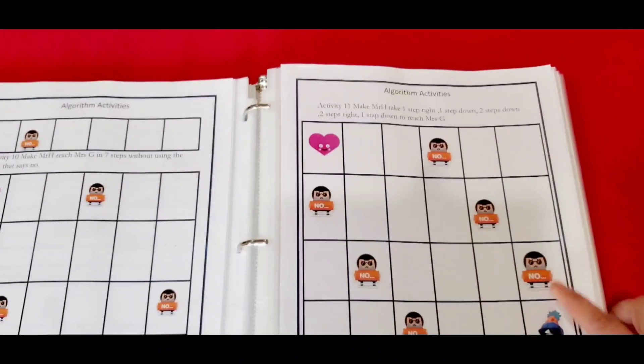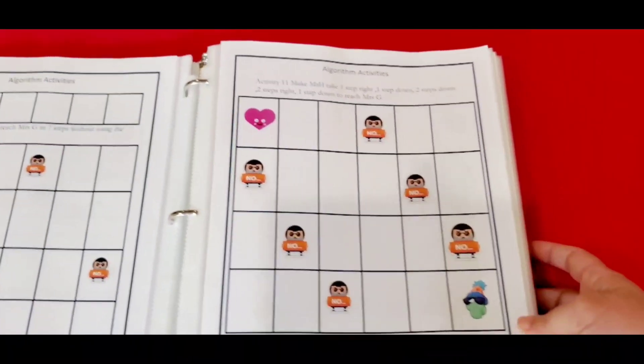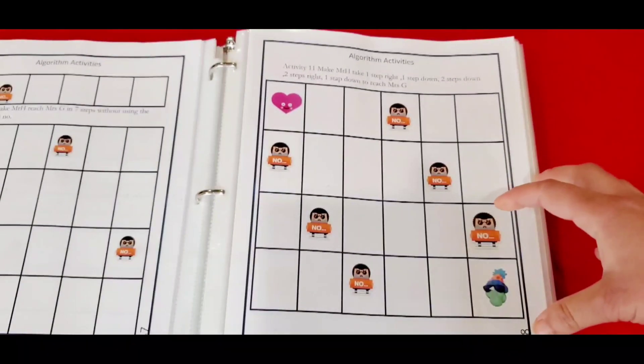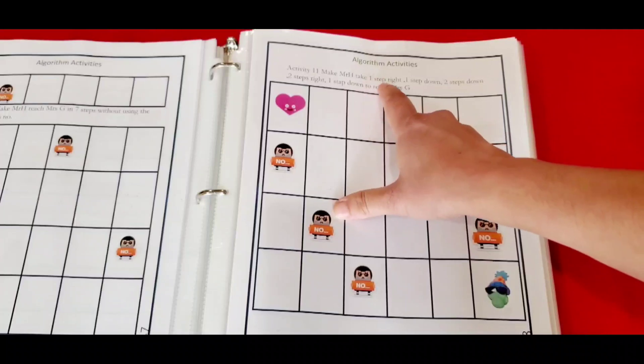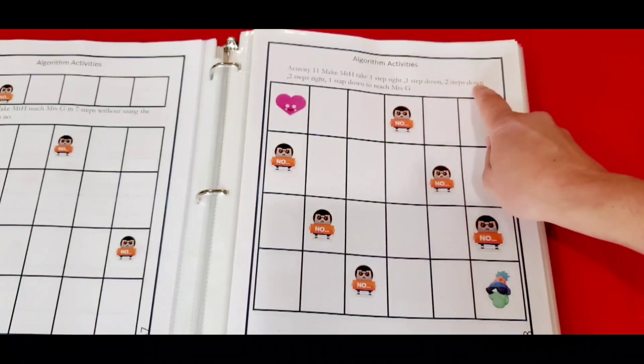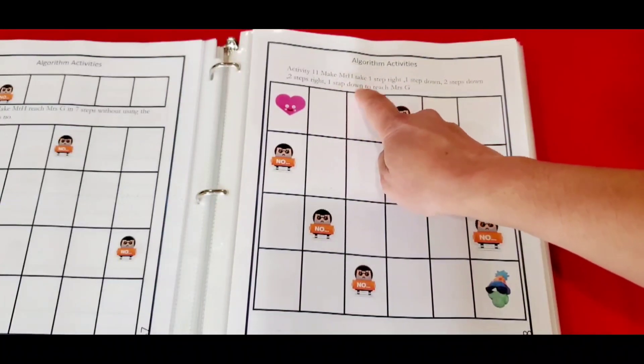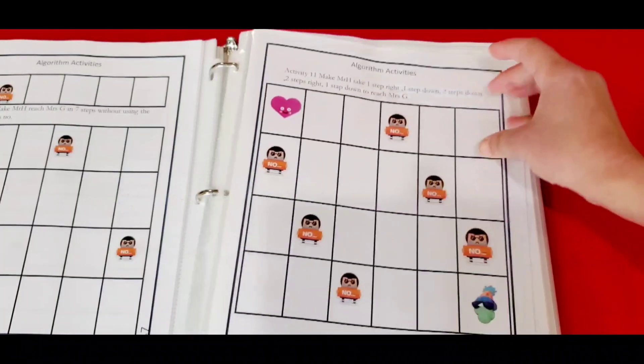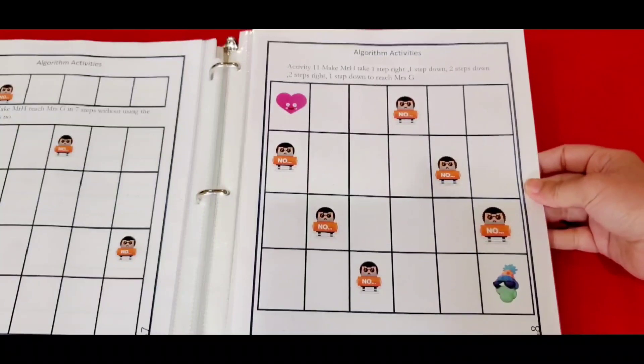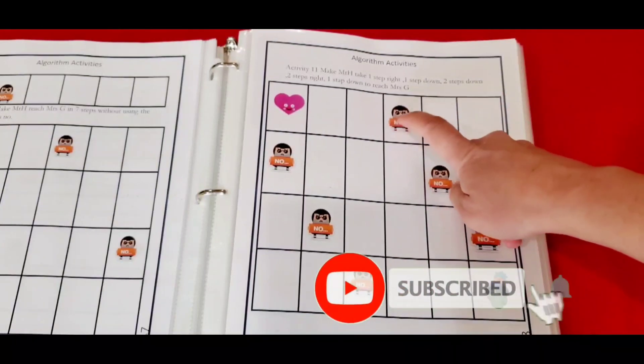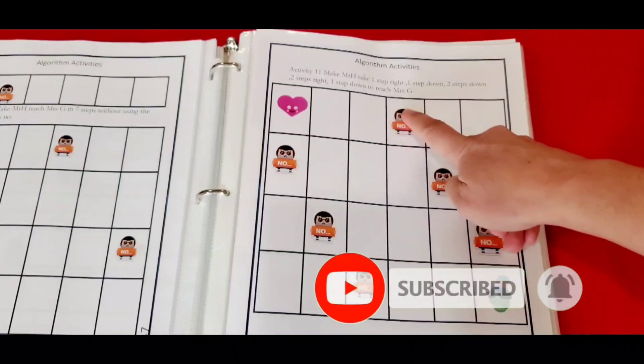In activity number 11, you have a lot of things going on. Make Mr. H take one step right, one step down, two steps down, two steps right, one step down to reach Miss G. That's how he has to take a step and he cannot be at the place where you have the image.